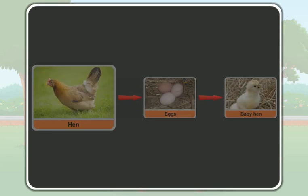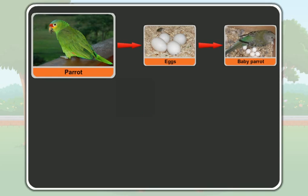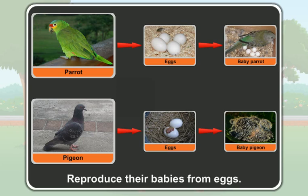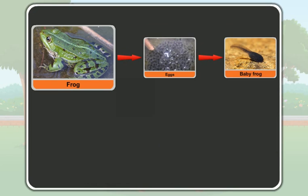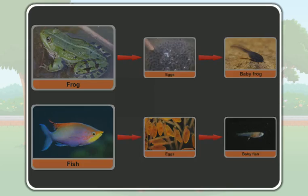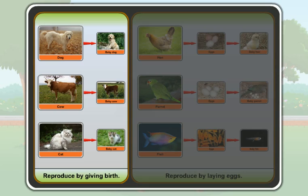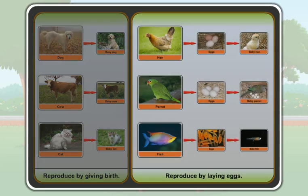Like the hen, a goose also reproduces its baby from the egg. A parrot and a pigeon also reproduce their babies from eggs. Similarly, frog and fish also reproduce their babies from an egg. So, most animals reproduce in two ways: some animals reproduce by giving birth, and some animals reproduce by laying eggs.